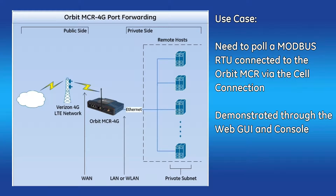The Orbit MCR4G has a public side and a private side. Your public side is going to be whatever IP address your cell service provider gives you, and then your private side is going to be your user-defined private subnet.